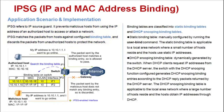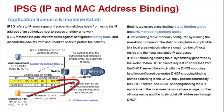The following figure illustrates the IPSG working mechanism. The switch forwards the packets from authorized hosts. When a malicious host uses the IP address of an authorized host to send a packet, the switch detects that the packet information does not match entries in the binding table, so the switch discards this packet.